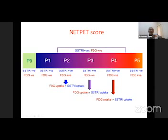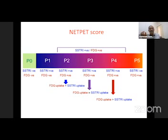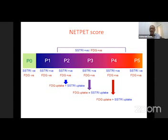We have a NET PET score that divides patients according to SSTR positivity and FDG positivity or negativity. P0 means neither SSTR nor FDG shows uptake; P1 is where SSTR expression is high compared to FDG or FDG is negative; P2 means both SSTR and FDG are positive but FDG uptake is less. P1 to P3 are ideal candidates for PRRT, while P5 is not an ideal candidate.